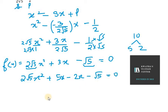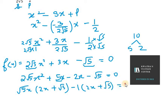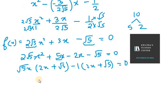Now what we can take common from the first two terms is √5x, so we are left with 2x and we are left with √5 inside the bracket. Then what we can take common from the last two terms is -1, and we are left with 2x + √5 = 0. So now we have two values: 2x + √5 = 0 and √5x - 1 = 0.